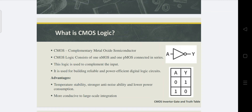This logic is used to get the complement of the input and is used for building reliable and power efficient digital logic circuits. Some advantages are temperature stability, stronger anti-noise ability, and lower power consumption, more connected to large-scale integration. This is the symbol for CMOS logic — if we give A as input we get the complement, Y. If we give 0, the CMOS logic will provide 1; if we give 1, it will provide 0.